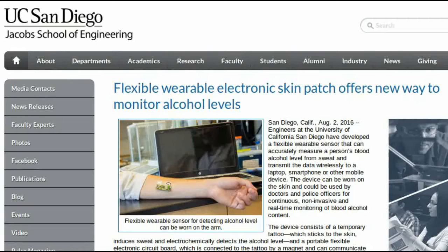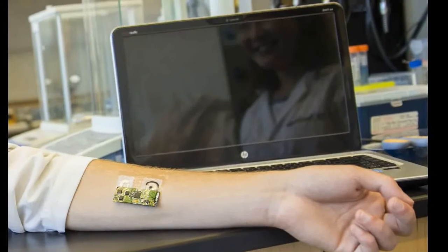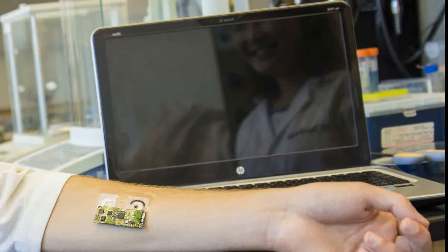Engineers at the University of California, San Diego have developed a flexible wearable sensor that can accurately measure a person's blood alcohol level from sweat and transmit the data wirelessly to a laptop, smartphone or other mobile device.